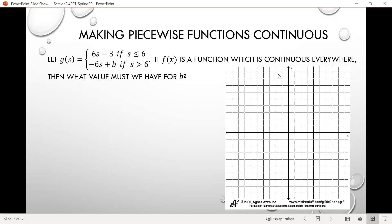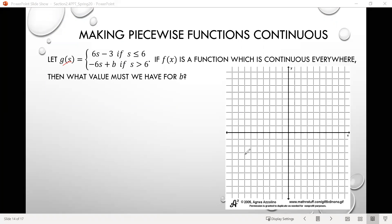So we're told that we have this function g of s, and we'll pay close attention here to the fact that s is our variable, our input variable there. So we have that g of s is given by the function or the formula 6s minus 3 if s is less than or equal to 6, and then negative 6s plus b if s is greater than 6. And they tell us that g of s—I'll talk to my PowerPoint guy about that one.